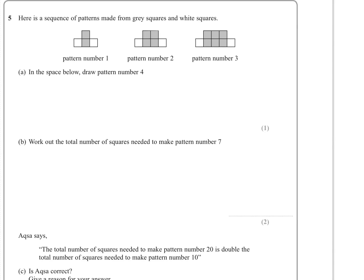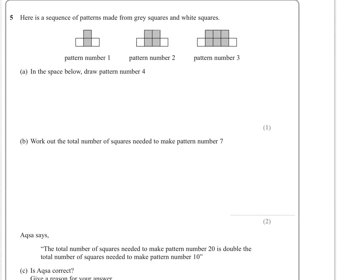We know there's going to be four grey tiles, because for pattern number 3 there were 3, pattern number 2 there were 2, and then 1 here. So we know we're going to have four grey ones. Each of the patterns has a blank one either side, and then it just repeats however many greys we've got. So we've got 1, 2, 3, 4 — a really bad diagram, but I'm sure you can do much better. And that would be my pattern number 4.